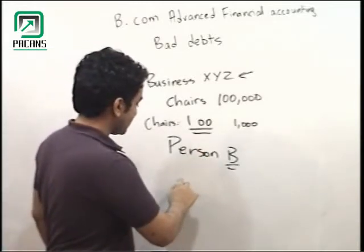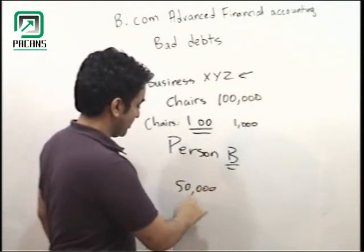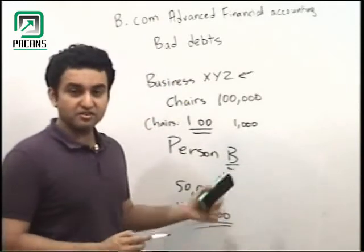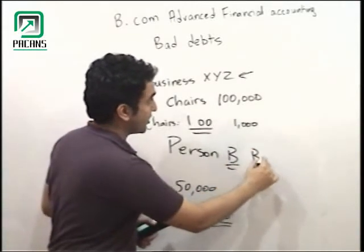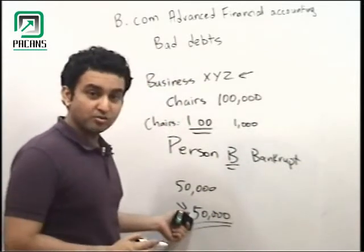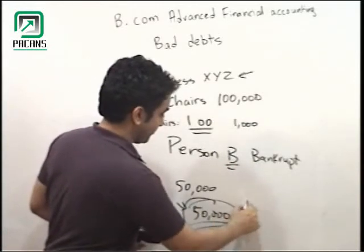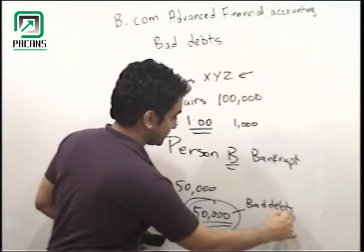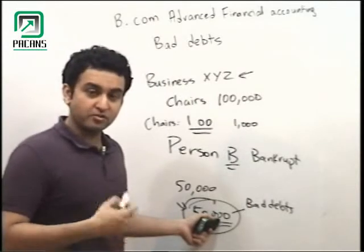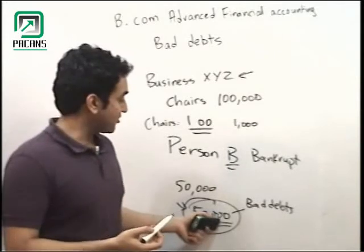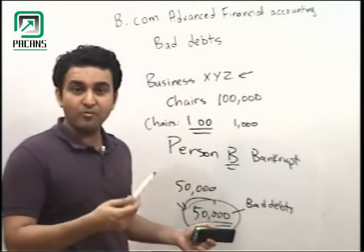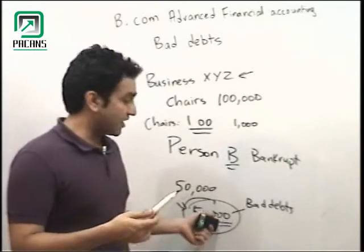For example, he owed me 50,000 rupees but didn't pay. It happened that person B, who owed me money, went bankrupt — he doesn't have money to pay me. So that 50,000 rupees becomes a bad debt. I was unable to get that money from that person. I sold the product but was unable to collect the payment — that is considered a bad debt.